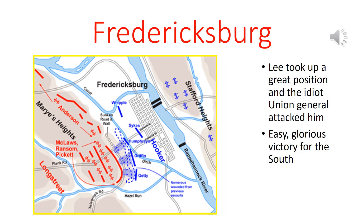After Lee left Maryland, he retreated to Virginia, regrouped the Army of Northern Virginia, and they concentrated at Fredericksburg. This was a great, well-fortified position. The new Union general, Burnside — who replaced McClellan — attacked this position and not surprisingly lost. This was an easy, glorious victory for the South, and it really broke Northern morale in the Army of the Potomac for quite a while. It would be a long time before the Northern Army was truly combat effective again.